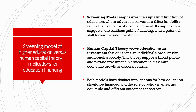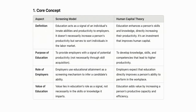Human capital theory basically views education as an investment that enhances the individual's productivity and benefits of society. This theory therefore supports broad public and private investment in education to maximize economic growth and social returns. Both models have distinct implications for how education should be financed and the role of policy in ensuring equitable and efficient outcomes for society. Let us look at the distinctions in the core concept of the screening model and the human capital theory.